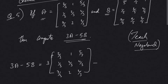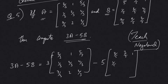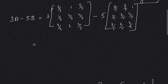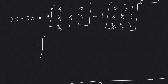Then minus 5 times of the second matrix: 2/5, 3/5, 1, 1/5, 2/5, 4/5, 5/5, 6/5, 2/5. As I had already given in the earlier videos, when you multiply a matrix by any scalar, all the elements of the matrix get multiplied by that scalar.